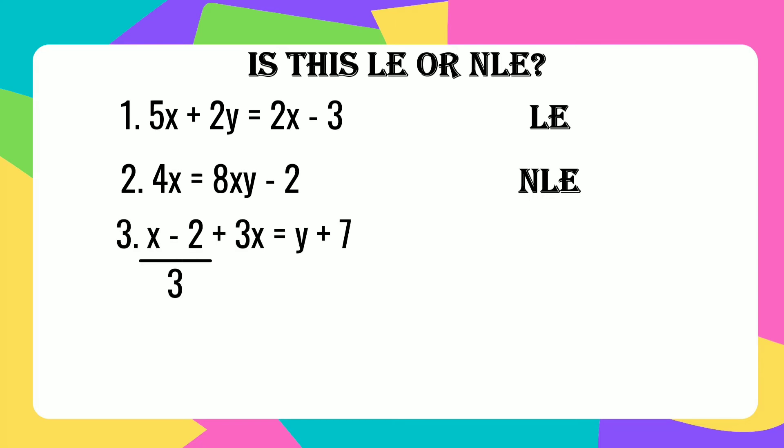Number 3: x minus 2 over 3 plus 3x equals y plus 7. This is a linear equation in two variables.